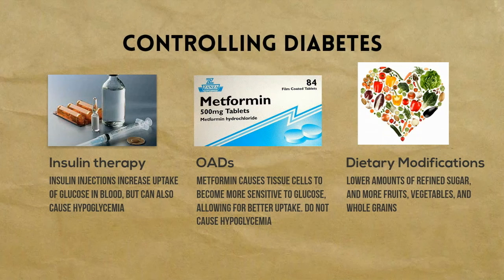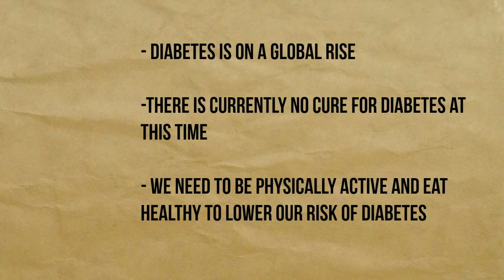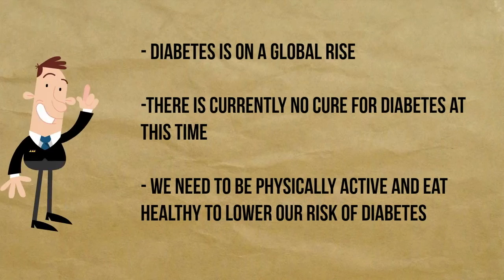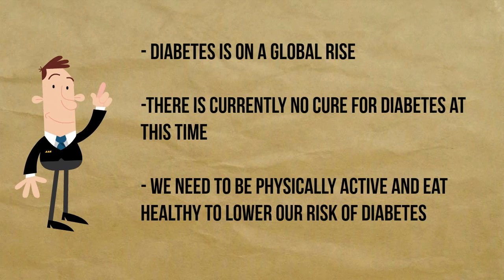Lastly, it is important to center your diet on eating high-fiber, low-fat foods such as fruits, vegetables, and whole grains, as well as lowering your intake of refined sugars and sweets. Diabetes is projected to rise substantially in the next few decades. There are 86 million Americans that currently are at risk of developing type 2 diabetes mellitus, which is 9.4% of the American population.